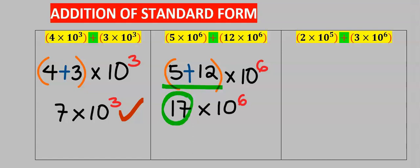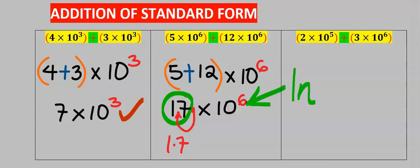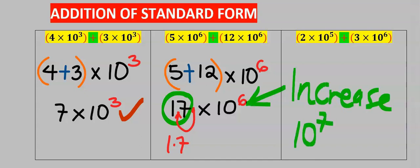Next, 17 is greater than 10, so I will move the decimal one step to the front to have 1.7. Because of this movement, the power of 6 increases to become 10 to the power of 7.